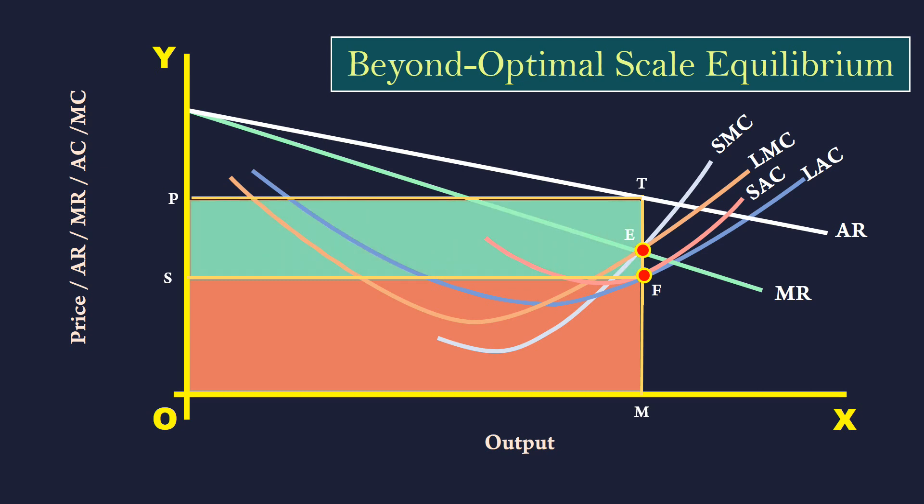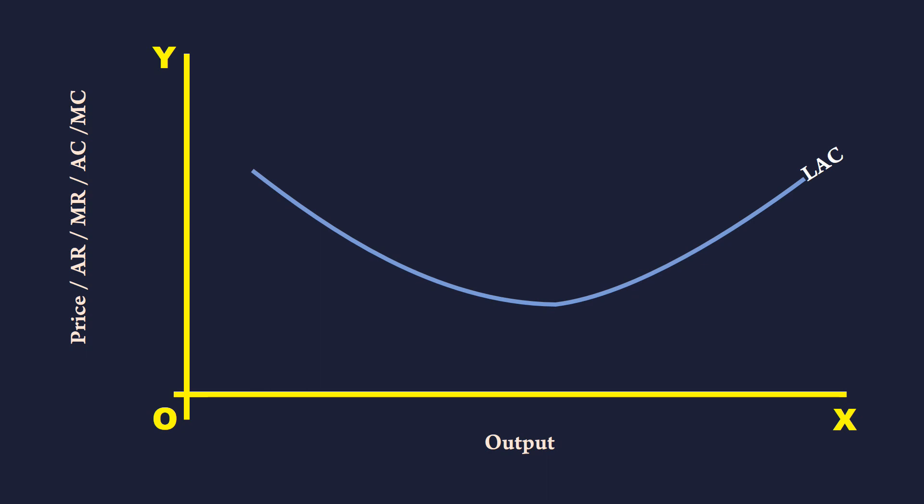In short, what is to be understood is that in the long run, depending upon the market conditions, a monopoly firm can operate either on the falling side or minimum point or rising side of the LAC curve and be in equilibrium and enjoy abnormal profit. Our discussion on long run monopoly equilibrium ends here.